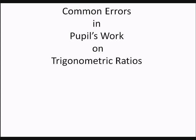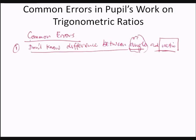This is a short presentation on common errors in pupils' work on trigonometric ratios. The first common error is that pupils get confused between angle and ratio — they don't seem to know the difference between the two.